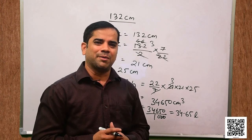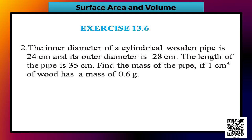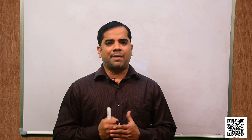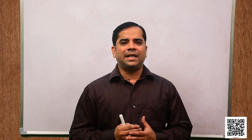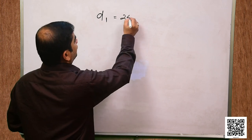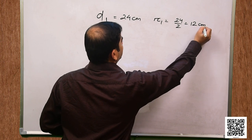Let us now discuss question number 2. The inner diameter of a cylindrical wooden pipe is 24 centimeter and its outer diameter is 28 centimeter. The length of the pipe is 35 centimeter. Find the mass of the pipe if 1 cm³ of wood has a mass of 0.6 gram. The inner diameter D1 = 24 cm, so inner radius R1 = 12 cm.